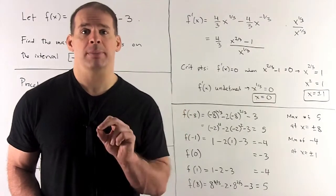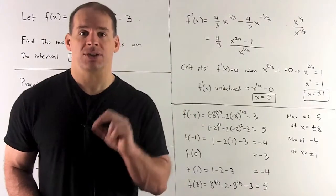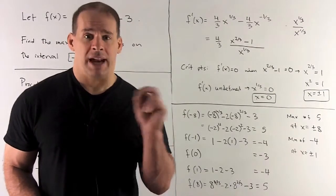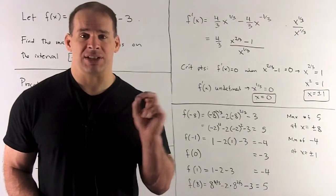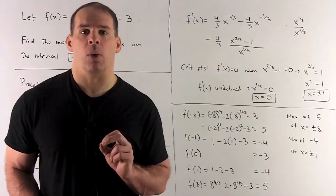2 cubed gives me 8. So if I rewrite that, 8^(1/3) = 2. Then I take the 4th power of that, I get 16. So the minus sign is going to go away anyway.